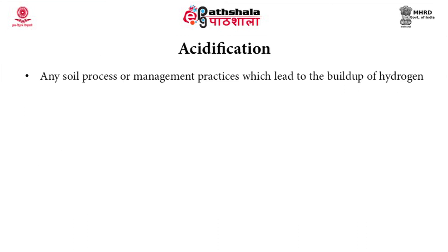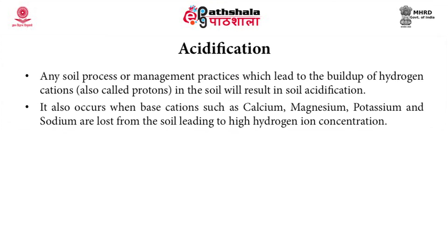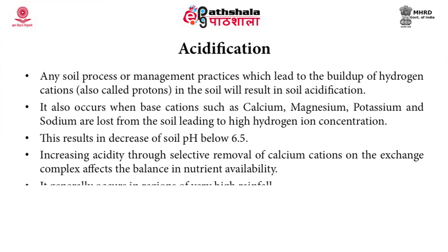Next is acidification. Any soil process or management practice which leads to the buildup of hydrogen cations in the soil will result in soil acidification. It also occurs when basic cations such as calcium, magnesium, potassium and sodium are lost from the soil, leading to high hydrogen ion concentration. It results in decrease of soil pH below 6.5 and generally occurs in regions of very high rainfall. Increasing acidity through selective removal of calcium cations on the exchange complex affects the balance in nutrient availability.